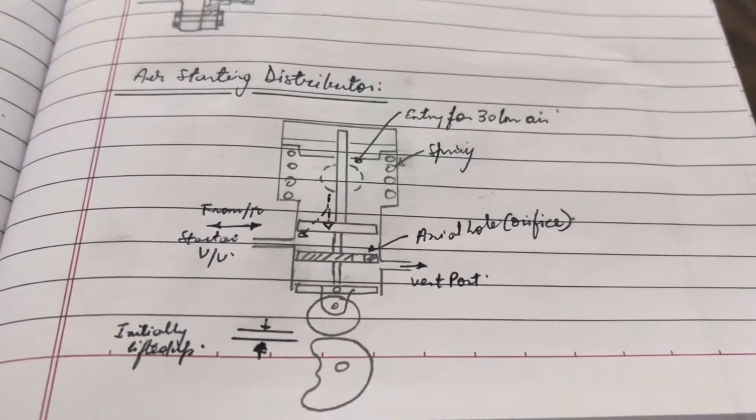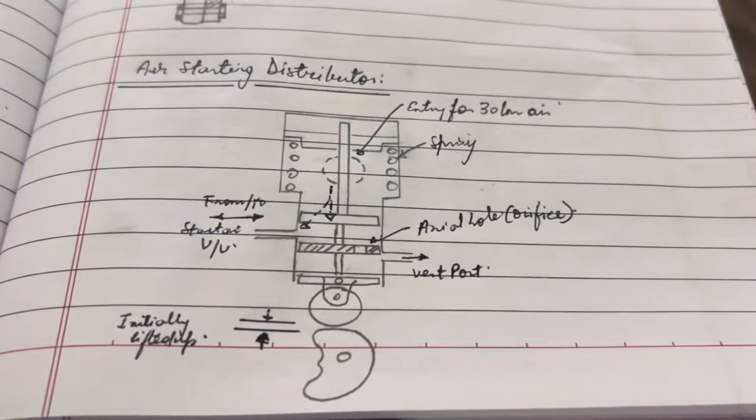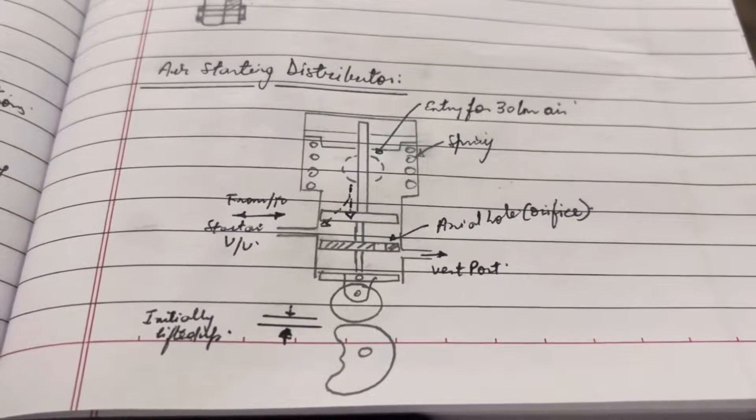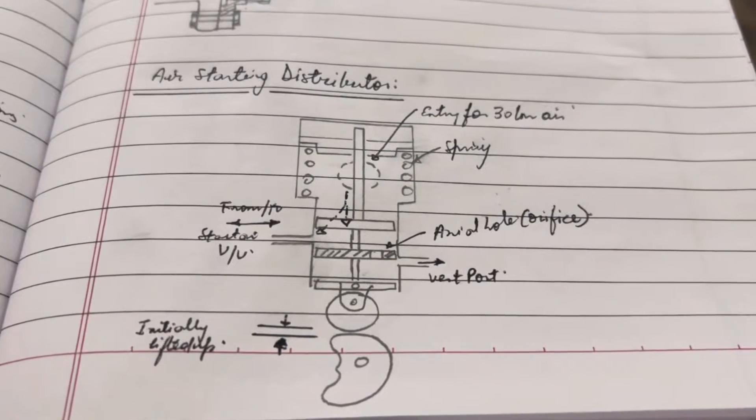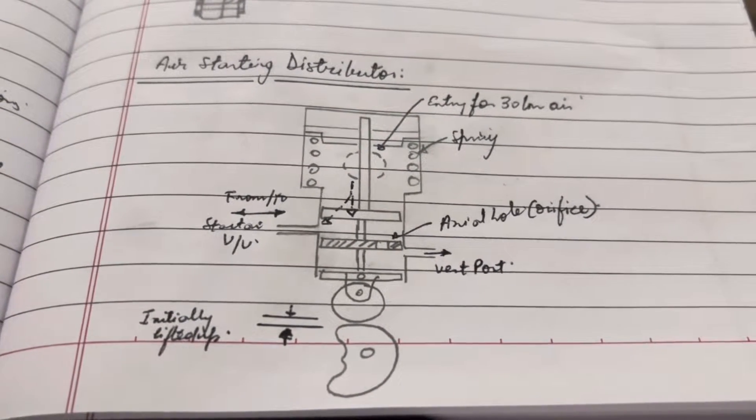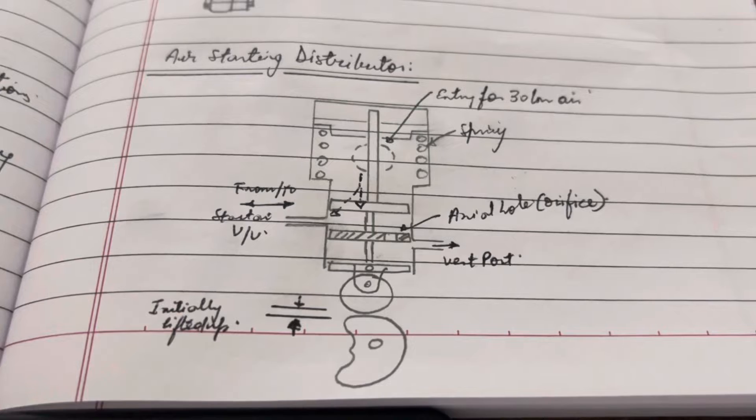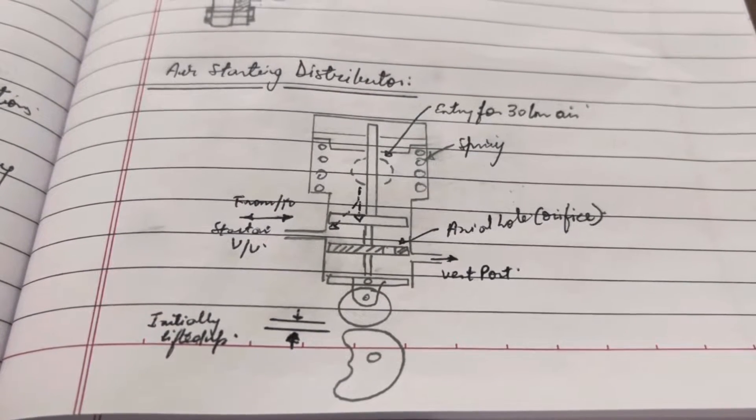Hi everyone, today we will focus on how the air starting distributor works. This is specific to the MAN BMW engine, and the construction might vary for other engines, so it has to be maker-specific. But as far as MAN engine goes, here's how it works.